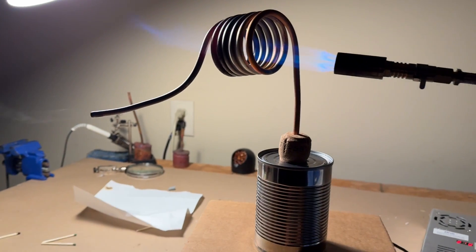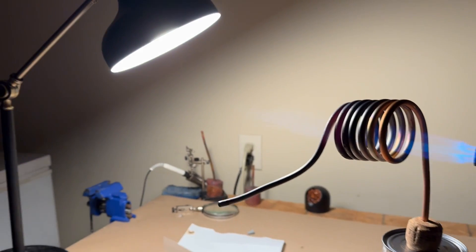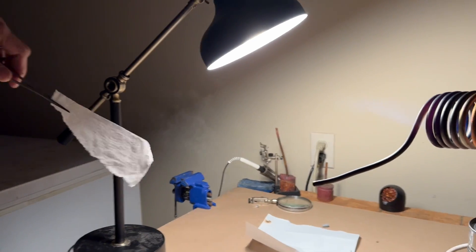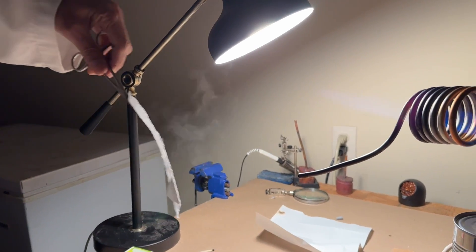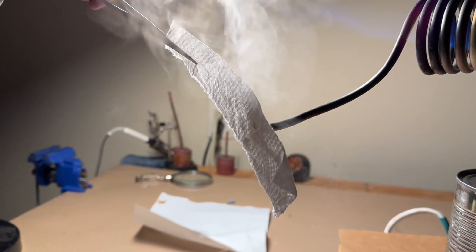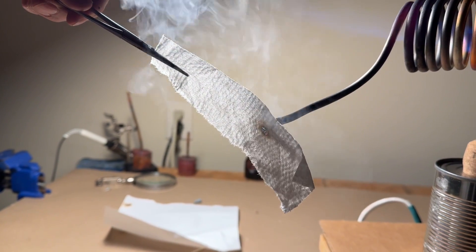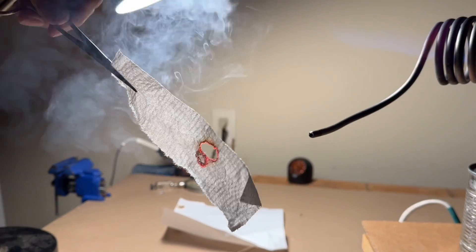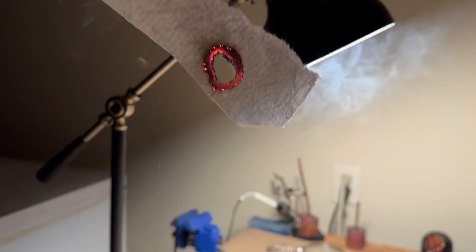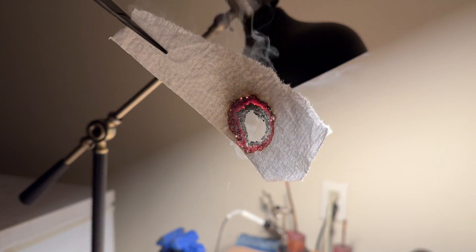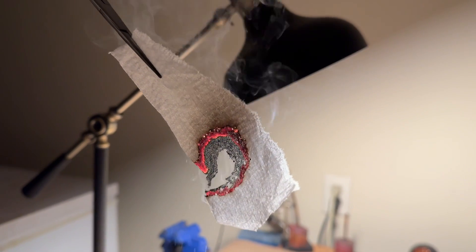Okay, now I have here some flammable paper. It's got some potassium nitrate in it. Let's see if it will light this. Look at that! I can totally light that.